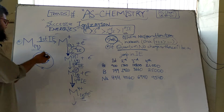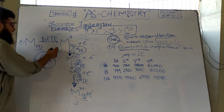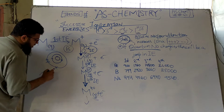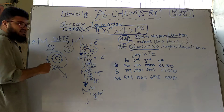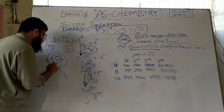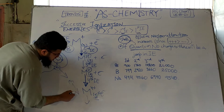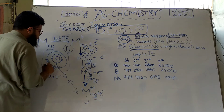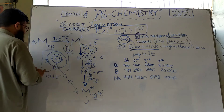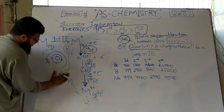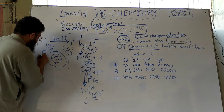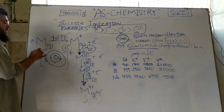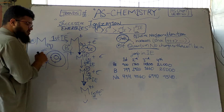Proton number five — hydrogen, helium, lithium, beryllium, boron — it's boron! Boron belongs to group three because it has three outermost electrons. If I give enough energy to the outermost electron to overcome the nuclear attractive force and escape, that energy is the first ionization energy, and I am left with a univalent positively charged ion.